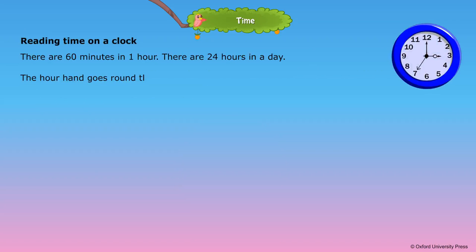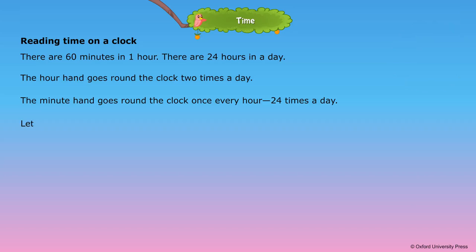The hour hand goes around the clock two times a day. The minute hand goes around the clock once every hour, 24 times a day. Let us learn how to read time on a clock.